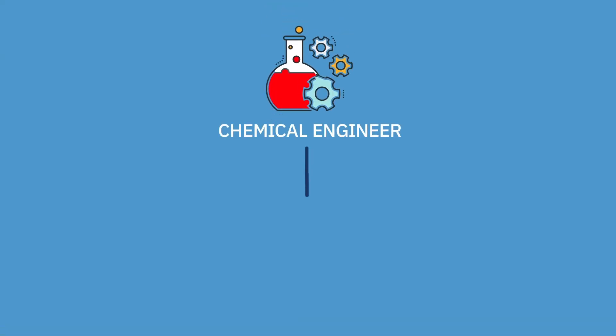Next is chemical engineering. Chemical engineers are kind of like chemists. They work in labs mostly. For example, chemical engineers work with food — they help design food, they help design taste for food and different ingredients in food, such as different types of potato chips. You have barbecue potato chips, original potato chips, and my favorite, sour cream and onion potato chips.